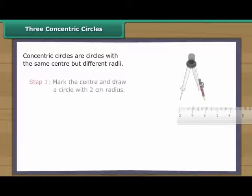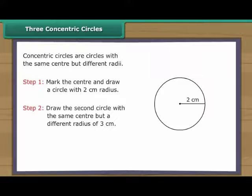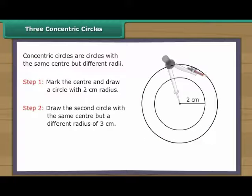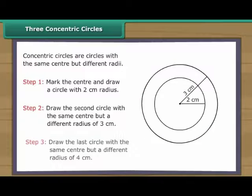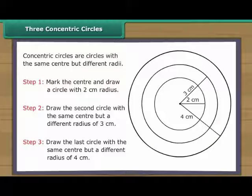Three concentric circles. Concentric circles are circles with the same centre but different radii. Draw three concentric circles with radii two, three, and four centimetres. Mark the centre and draw a circle with two centimetres radius. Draw the second circle with the same centre but a radius of three centimetres. Draw the last circle with the same centre but a radius of four centimetres. We have three concentric circles.